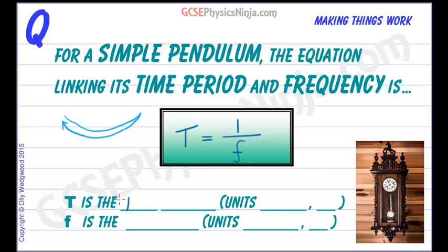So T is the time period, and the units of that are in seconds, or s. And f is the frequency, that's the number of oscillations happening per second, and the units of that are hertz, or Hz.